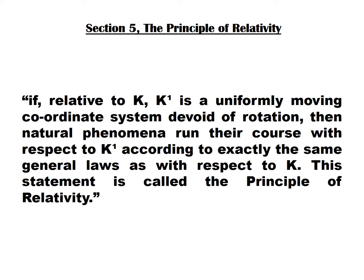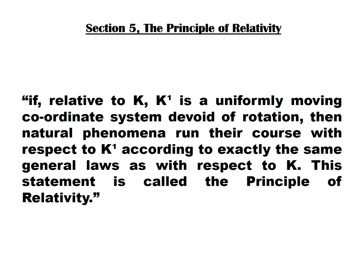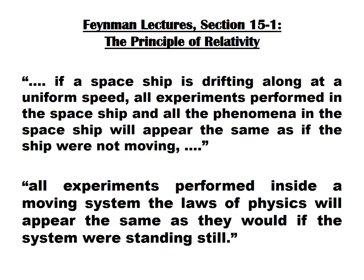If, relative to k, k1 is a uniformly moving coordinate system devoid of rotation, then natural phenomena run their course with respect to k1 according to exactly the same general laws as with respect to k. This statement is called the principle of relativity. For a last bit of clarification, it is also worth looking at Richard Feynman's more colloquial description given in his famous lectures: if a spaceship is drifting along at a uniform speed, all experiments performed in the spaceship and all the phenomena in the spaceship will appear the same as if the ship were not moving.